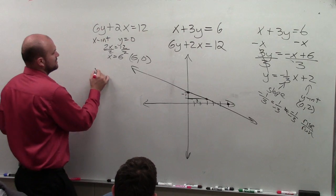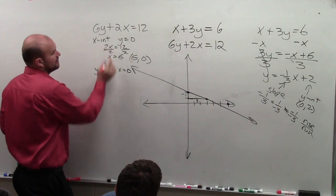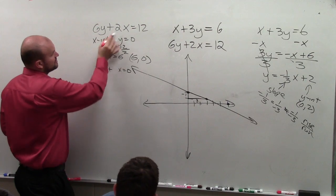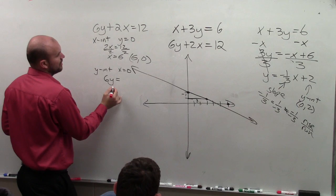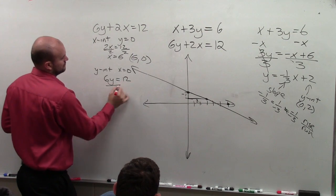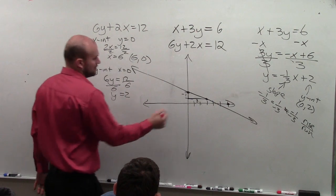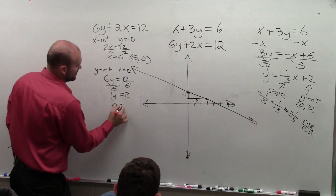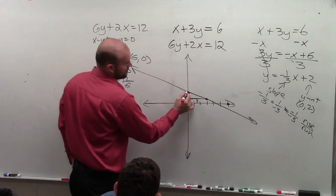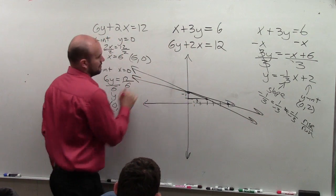And then I could do the y-intercept, where x equals 0. Put 0 in for x. Then I'd have 6y is equal to 12, y equals 2. So then I'd go 1, 2. So I have 0, 2.